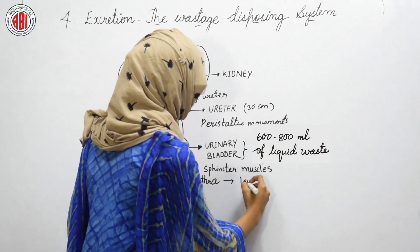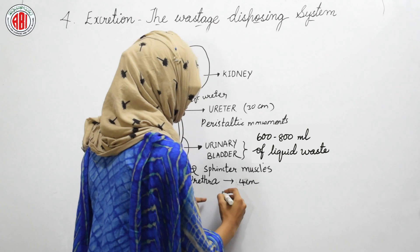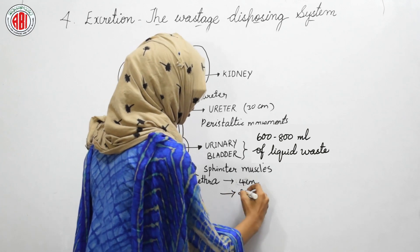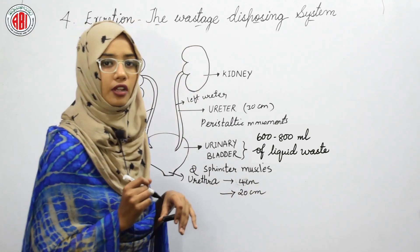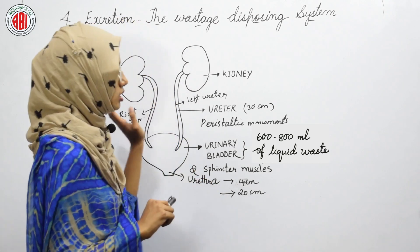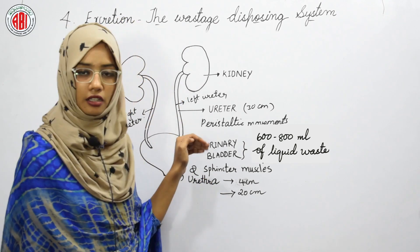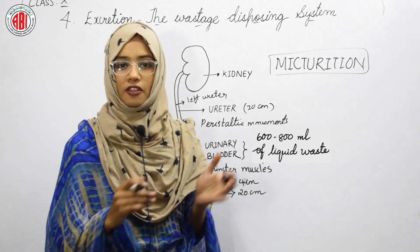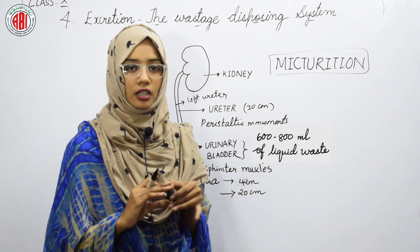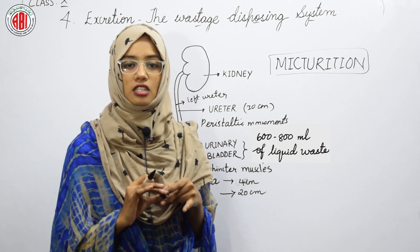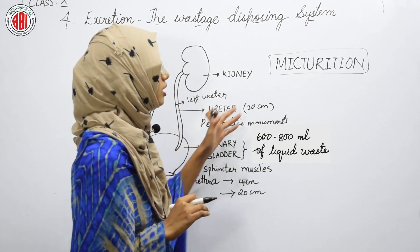The length of the urethra is 4 cm in females and 20 cm in males. So the length of the urethra varies between male and female. This covers the ureter, urinary bladder, and urethra. Micturition can be defined as the passage of urine by the relaxation of the sphincter muscles.